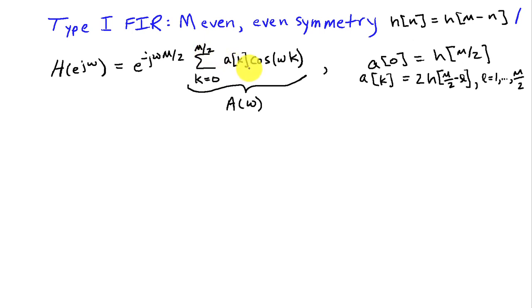which was the sum from k equals 0 to M over 2, coefficients AK times cosine of omega times k. And the coefficients are related to the impulse response as A of 0 being the middle value of the impulse response, H of M over 2. And then the other coefficients are obtained from twice the corresponding impulse responses. So if we design a filter to find AK, then we can easily use this relationship here to find the impulse response of the filter.